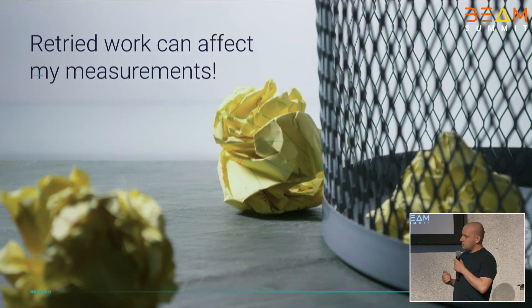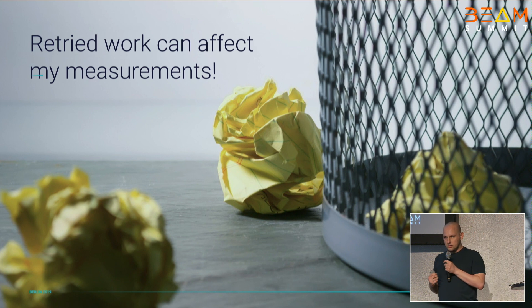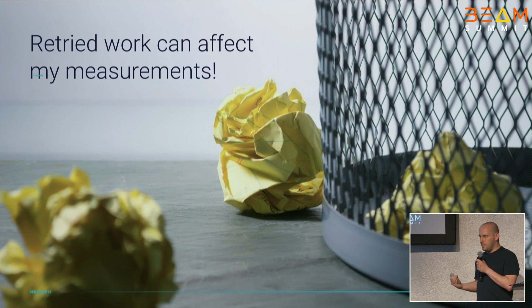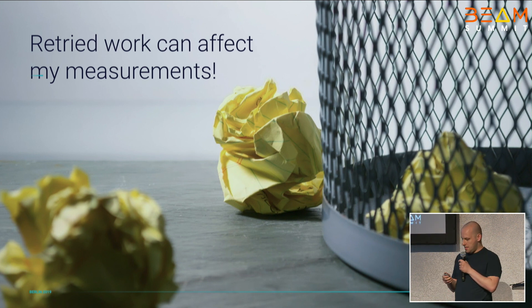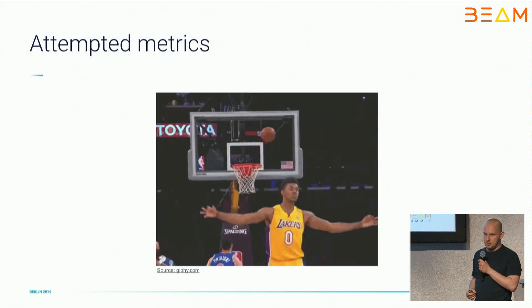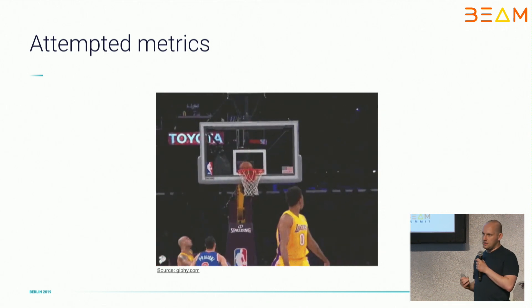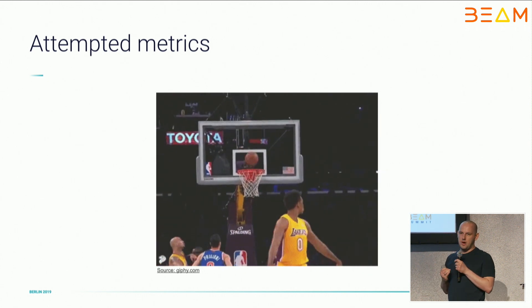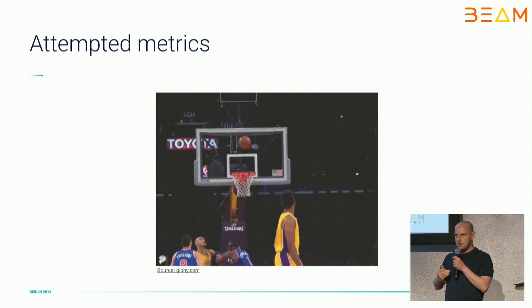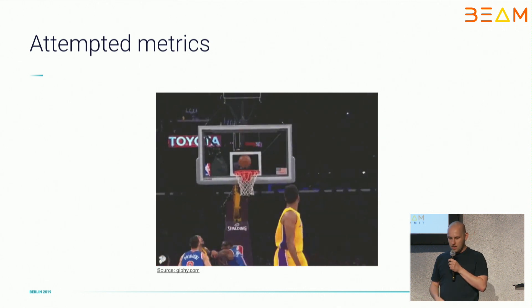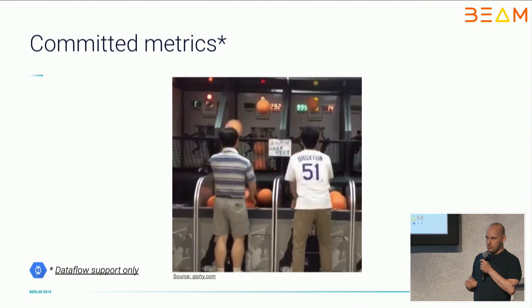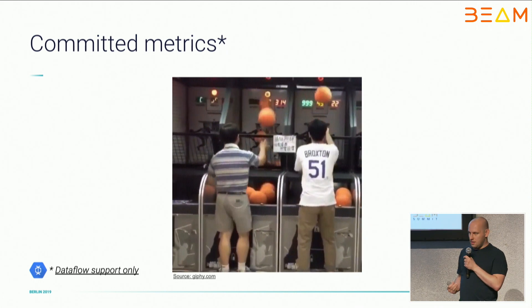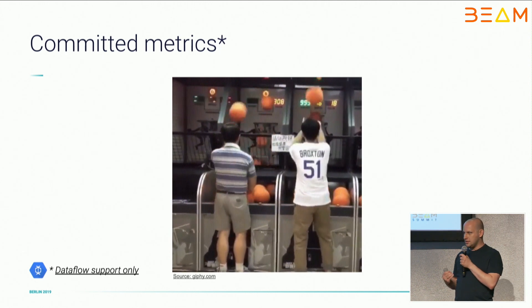There's another caveat you must know about: reprocessing work can also affect your measurements. If you're looking only for the last reported value like a gauge, that's probably not a big deal. But if some reprocessing increments your counters too many times, you will get an invalid metric. This is why BIM lets you define attempted metrics and committed metrics. Attempted metrics are collected across all attempts of all executions of all parts of the pipeline — including failed attempts. Committed metrics are collected only from successful attempts, which is probably what you want when counting on successful results.